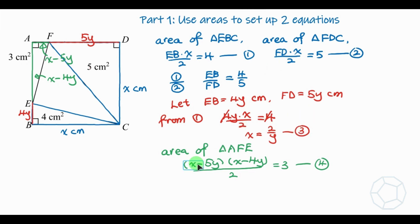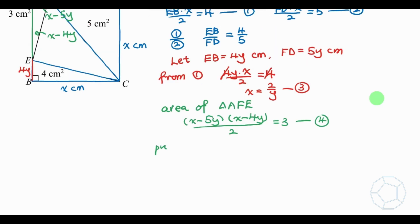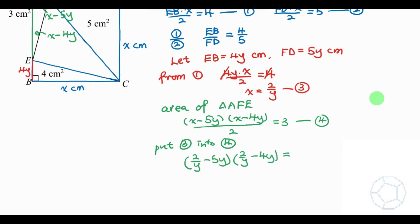Now we're going to substitute equation three into equation four to eliminate x. Replacing x with 2/y, we get (2/y − 5y)(2/y − 4y) = 6. This gives us an equation in one unknown y, which we then solve to find y and x and finally the area of the square.